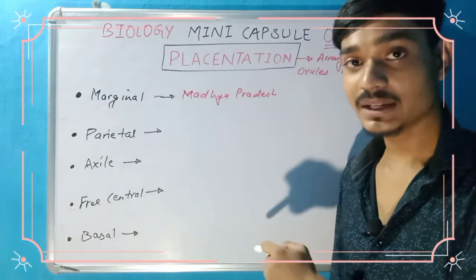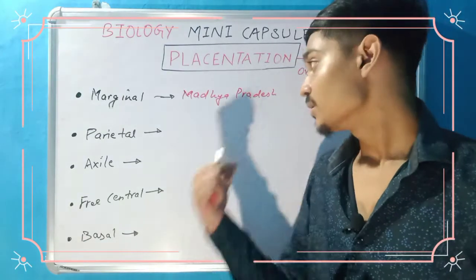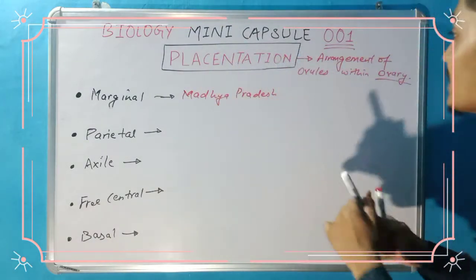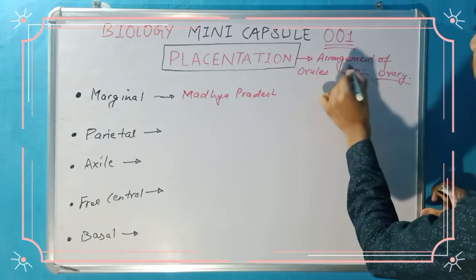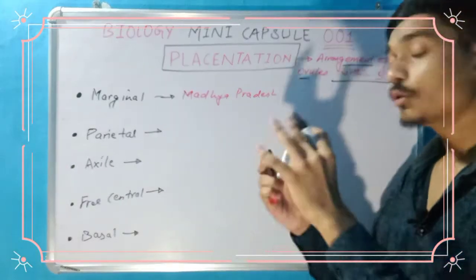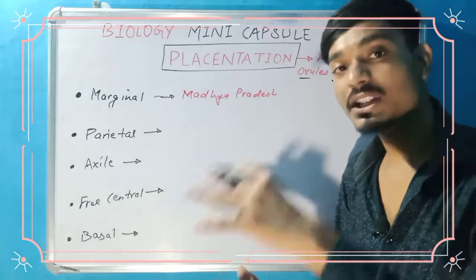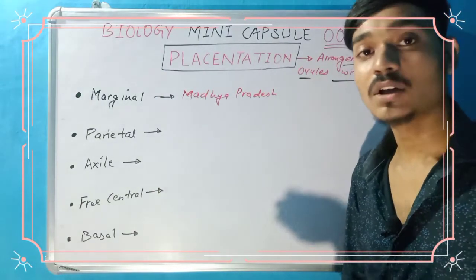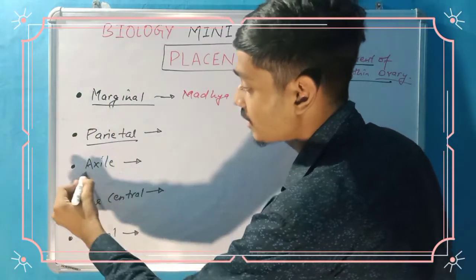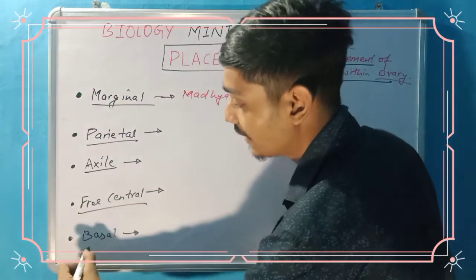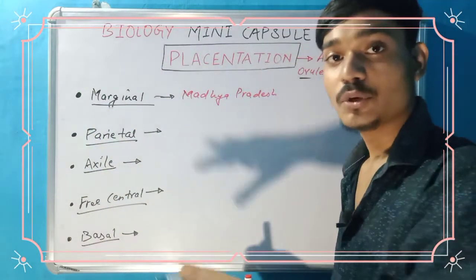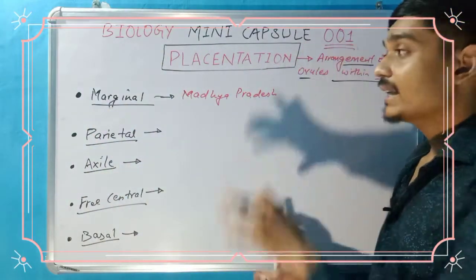How we remember it, I will also tell you. First is marginal. Placentation is the arrangement of ovules within the ovary — this is the definition of placentation. In an ovary, the arrangement of ovules is called placentation. There are five types: first is marginal, second is parietal, third is axile, fourth is free central, and fifth is basal. These are the five types of placentation, meaning ovules in the ovary are distributed in five ways.